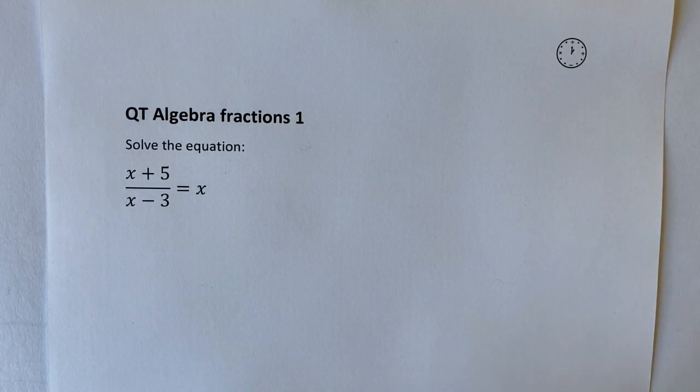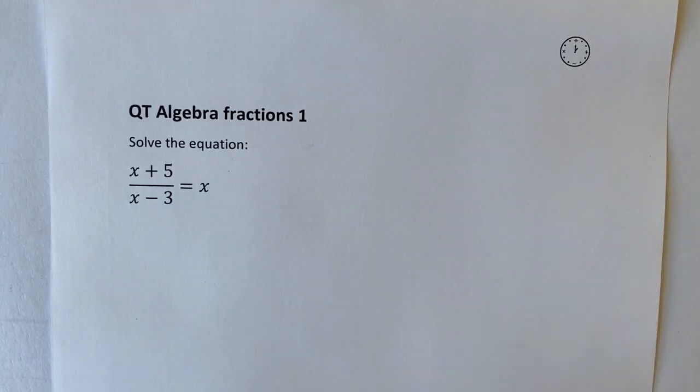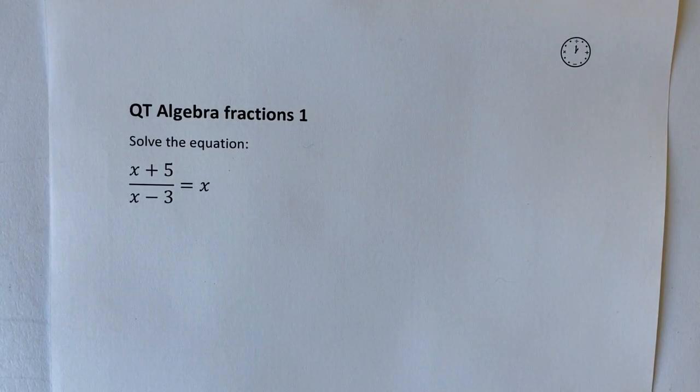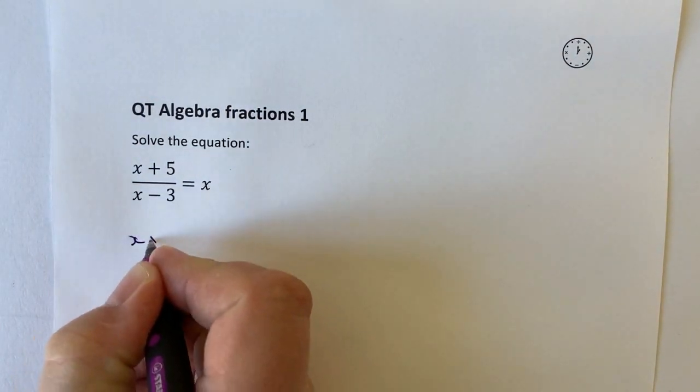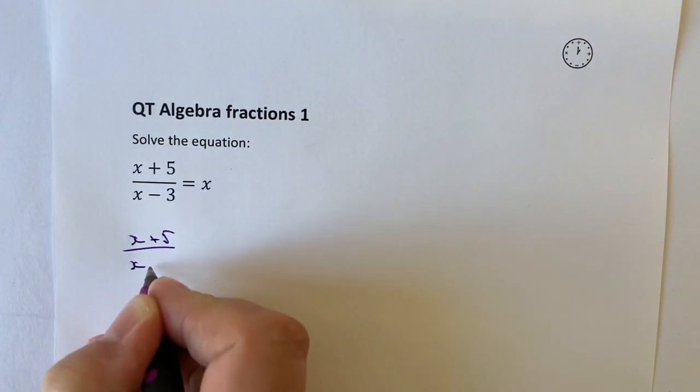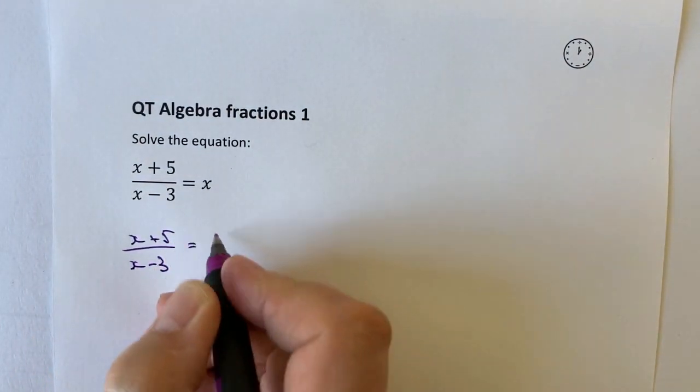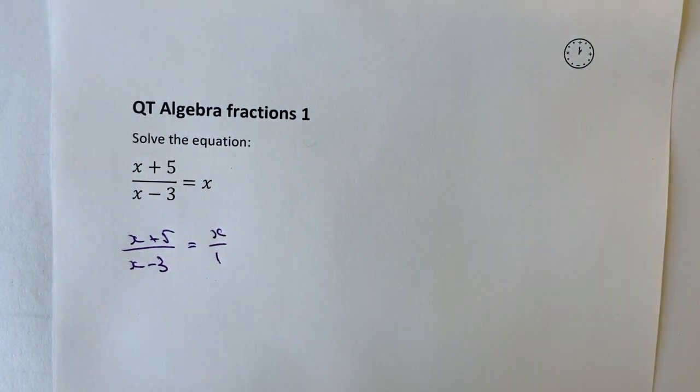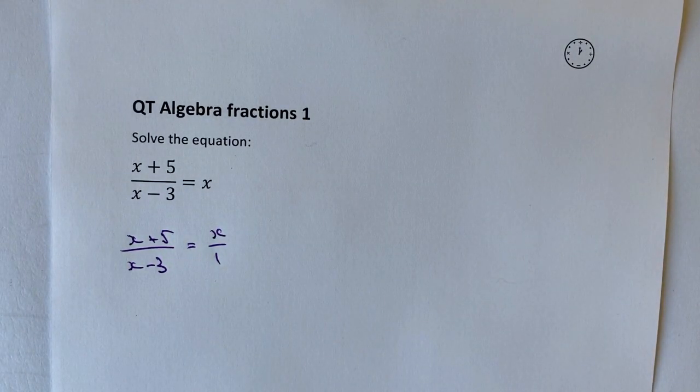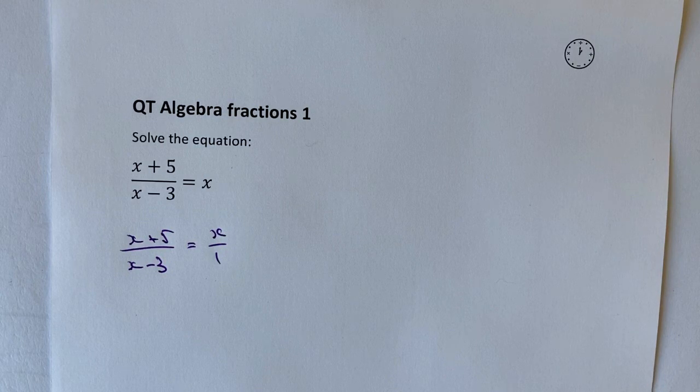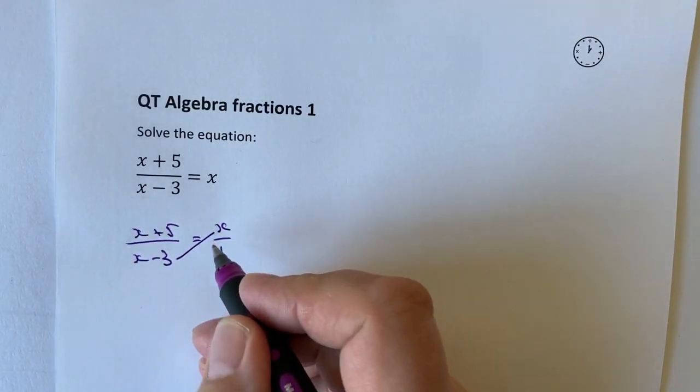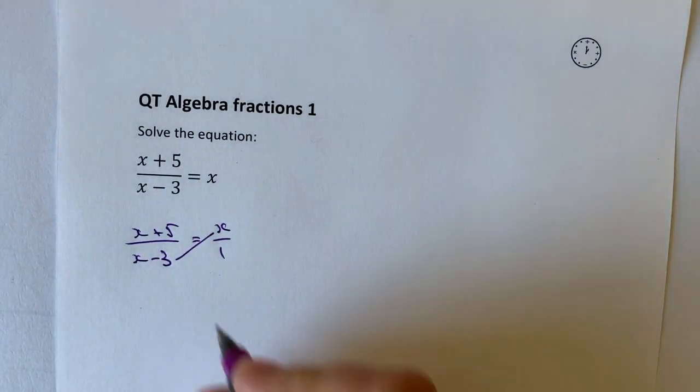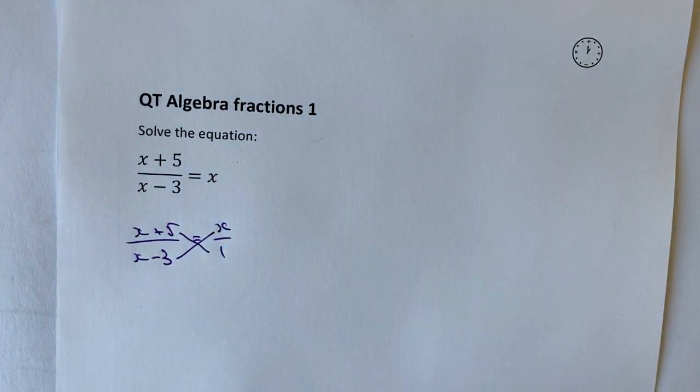So the first thing I'm going to do is have a look at this x. Now bearing in mind that it can be written as x plus 5 over x minus 3. But this x, I'm going to write it as x over 1, which is exactly the same. But what it allows us to do is do a little bit of cross-multiplication. So I'm going to cross-multiply the x minus 3 to the x, and also the x plus 5 to the 1.